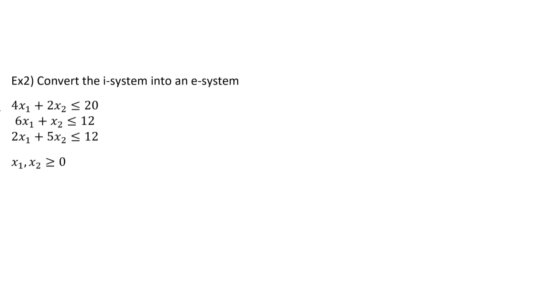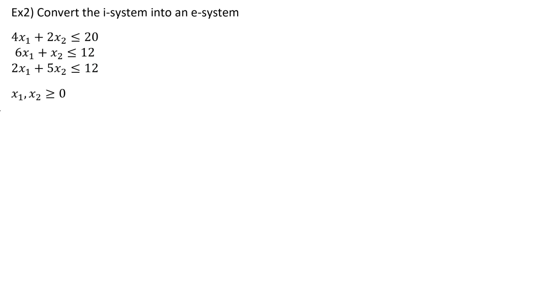Let's try another one. So example two, we're just going to convert this i-system into an e-system as well. So this time we have one, two, three inequalities. So we're just going to go one by one and add in the slack variables.